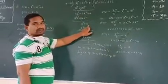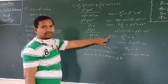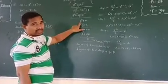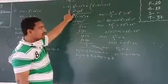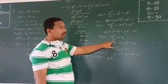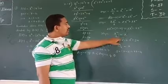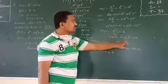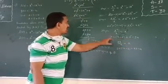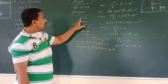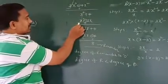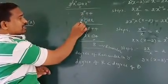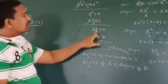Step 3: take the highest power of x here, which is x squared. Divide x squared by x to get x. Write x in the quotient. Multiply x by x minus 2: x times x gives x squared, and x times minus 2 gives minus 2x. Write x squared minus 2x below and subtract. x squared minus x squared cancels, and subtracting minus 2x gives plus 2x. Bring down plus 4, giving 2x plus 4.